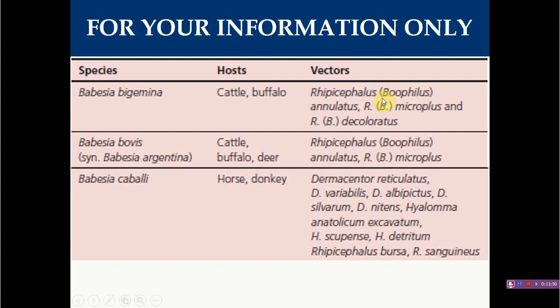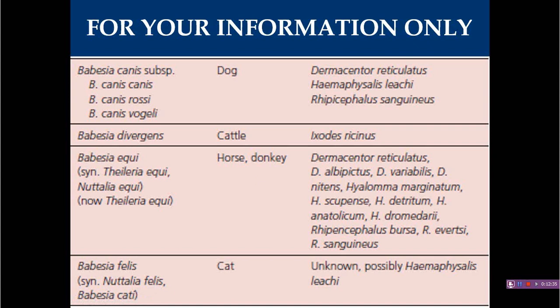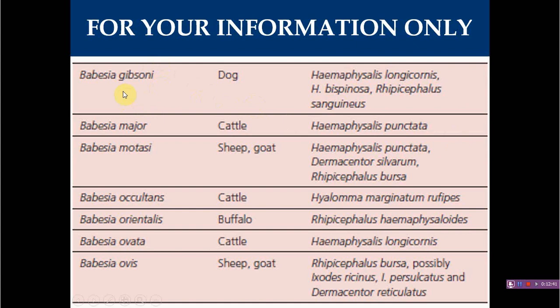Here is a summary of important Babesia species, their vectors, and hosts. Babesia bigemina affects cattle and buffalo, while Babesia bovis affects cattle, buffalo, and deer. Babesia caballi affects horses. Babesia canis and Babesia gibsoni are important pathogens in dogs. Babesia gibsoni is quite prevalent in the dog population of India. There are many other important species but we will not discuss them in detail in this lecture.